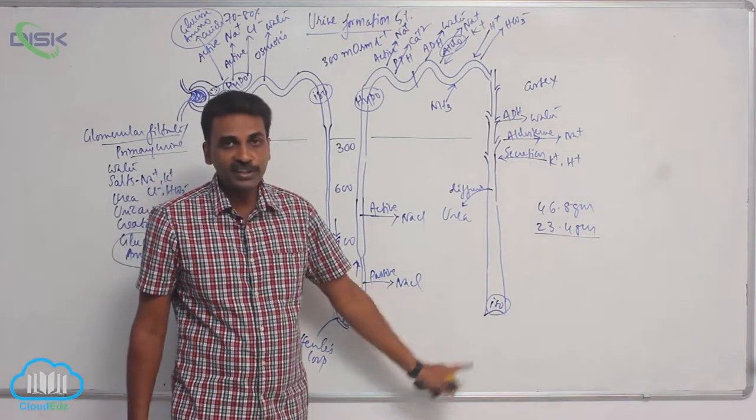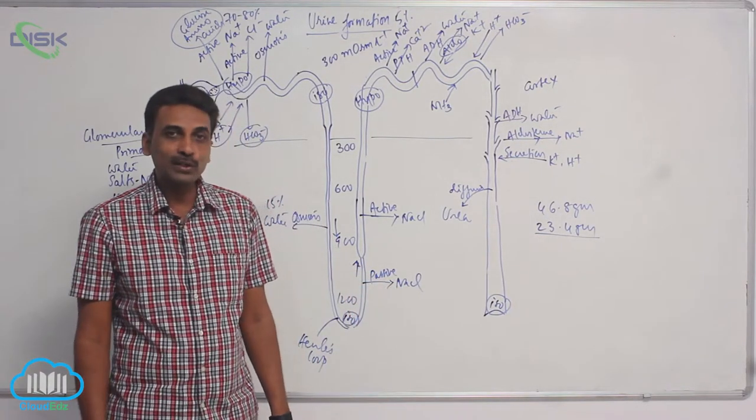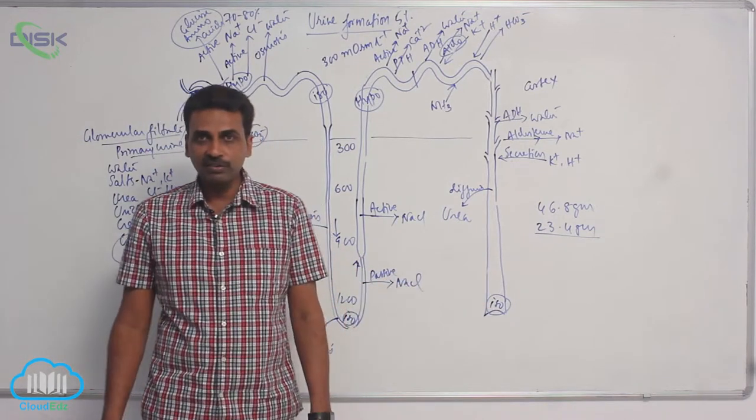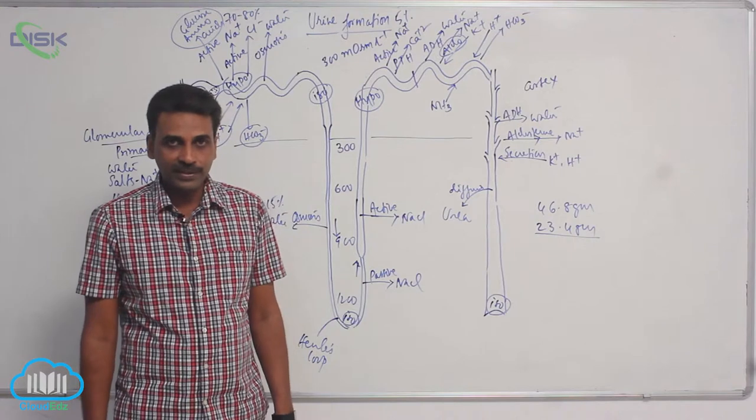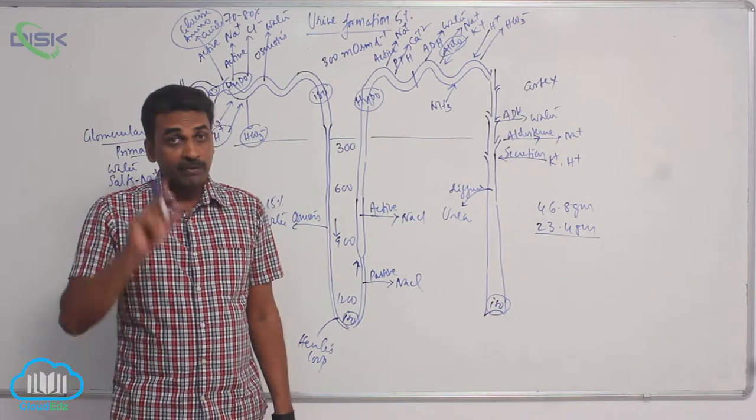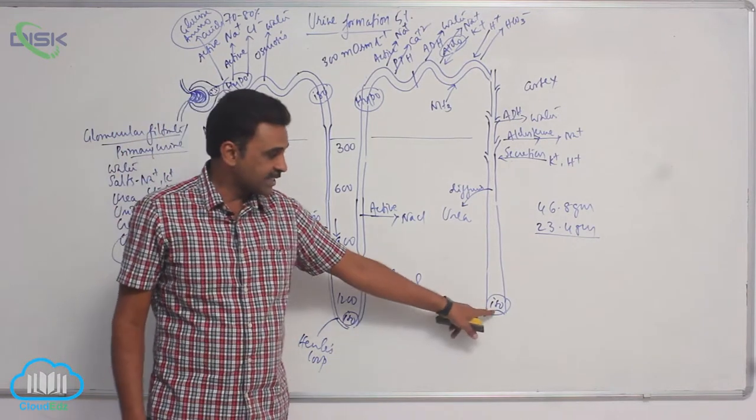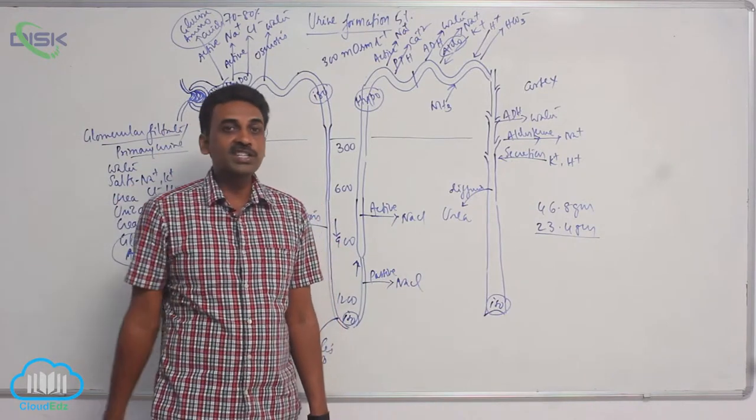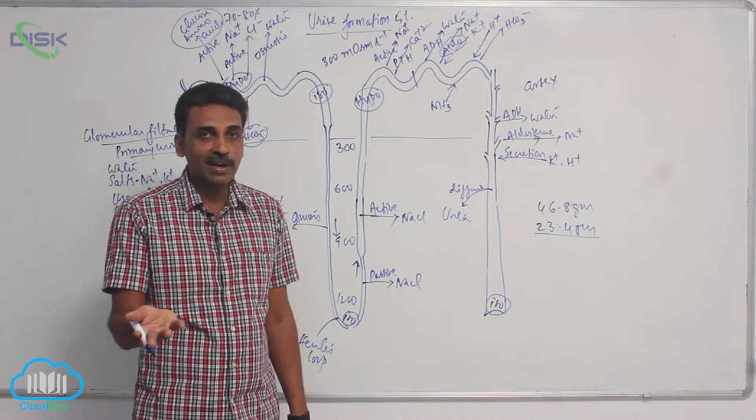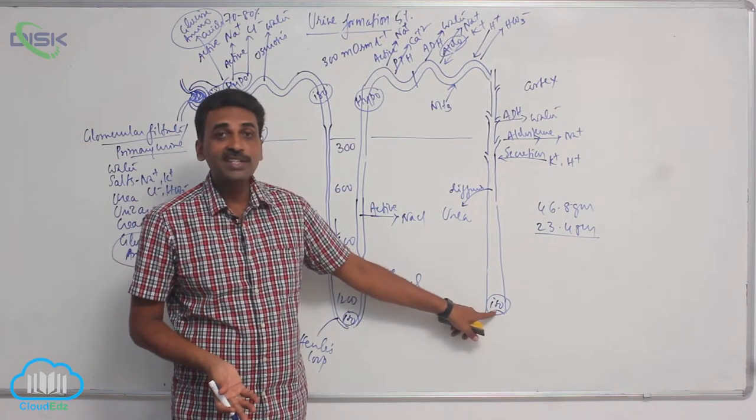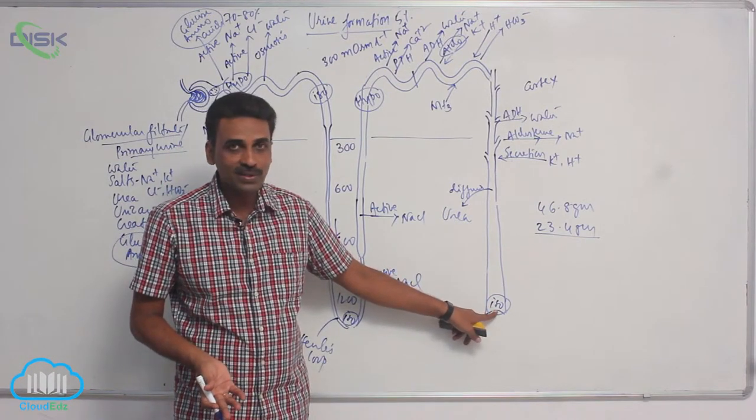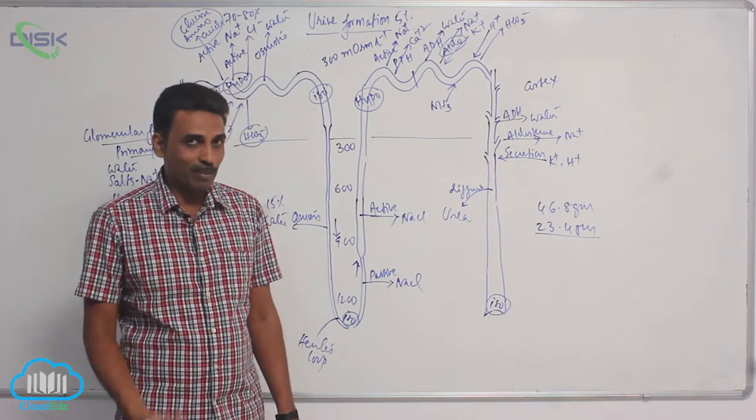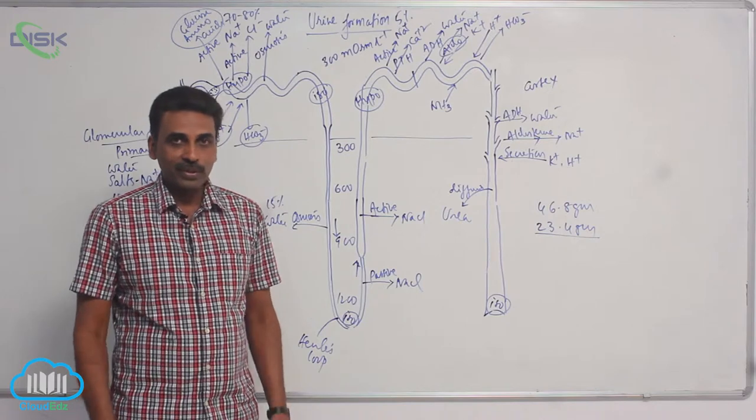It has become equal to medullary fluid, but when compared to blood plasma, it is several times higher. The blood plasma concentration is 300 milliosmolals per liter; the urine formed here is 1200 milliosmolals, so it is four times the original concentration of our blood plasma.